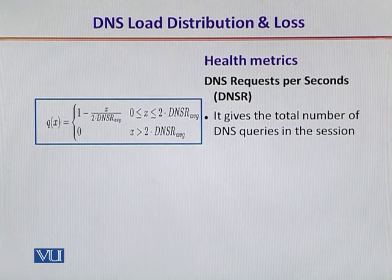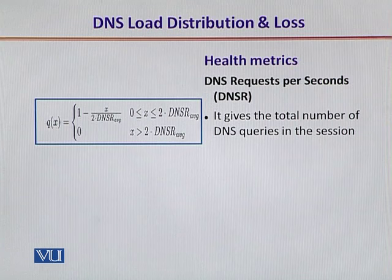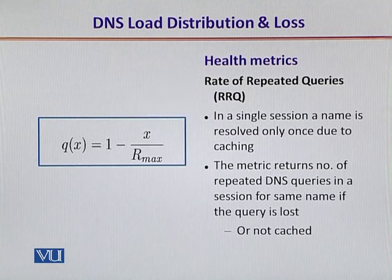DNS requests per second gives us the total number of DNS queries in a single session. By session, we mean a certain time period in which we determine the total requests made by all browsers from various computers in the system. It is represented by a similar mathematical expression.